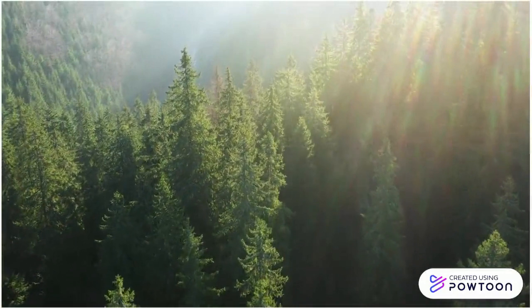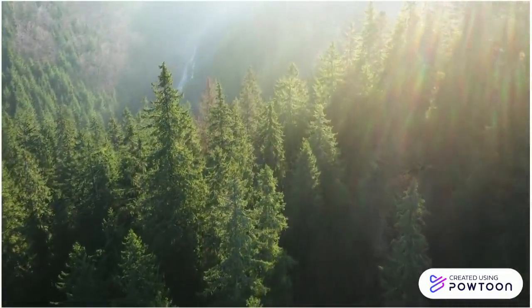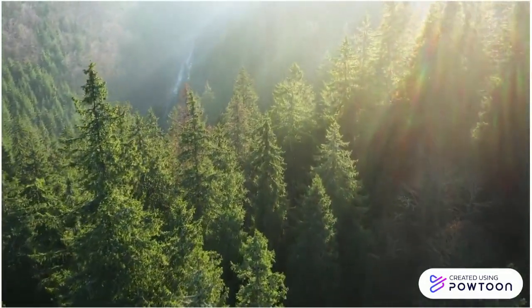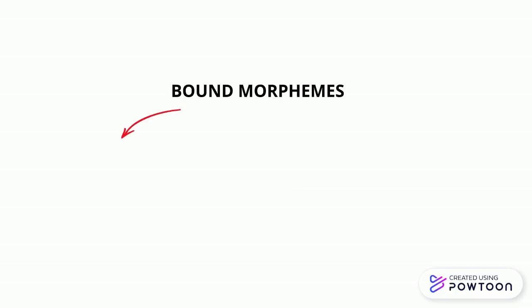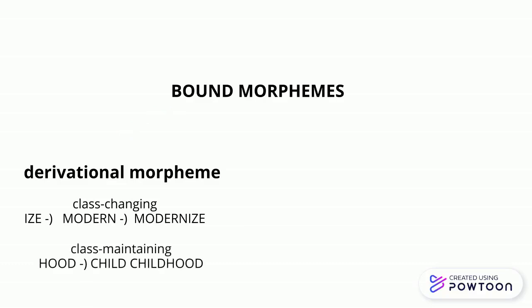Now, let's talk about bound morphemes. These are affixes that must be attached to the word. There are two types of bound morphemes: derivational and inflectional. Derivational morphemes can be class changing or class maintaining. An example of a class-changing derivational morpheme is "-ize". When added to the adjective modern, it creates the word modernize, which is a verb.